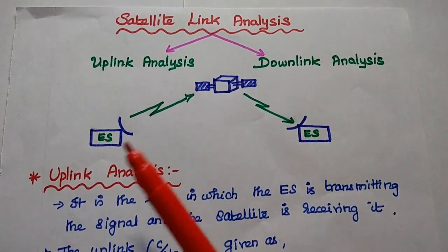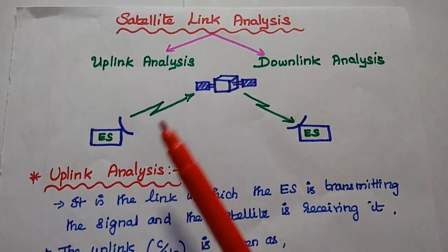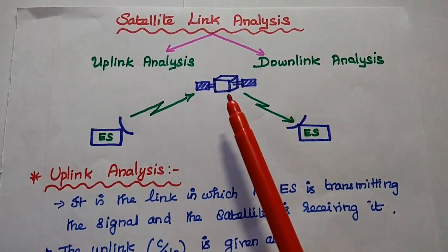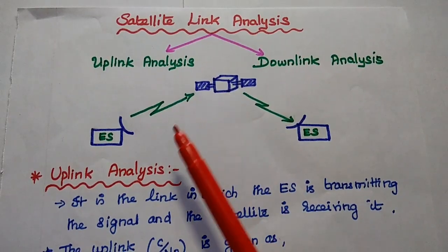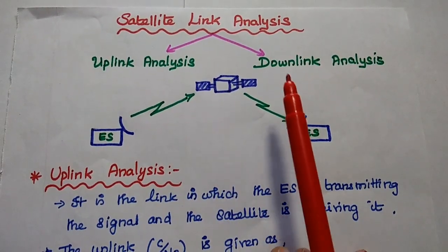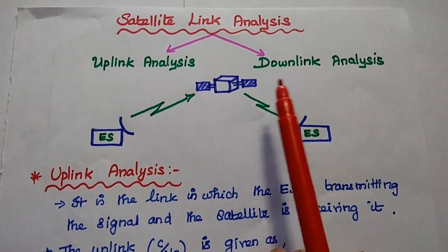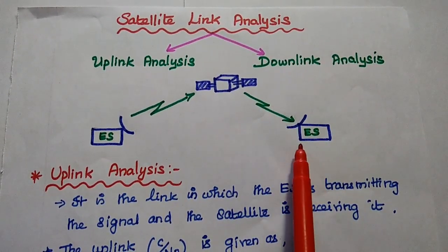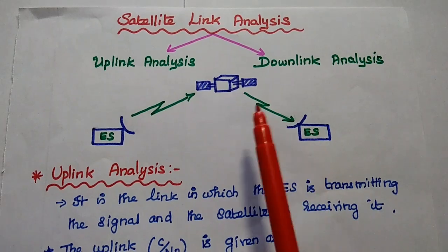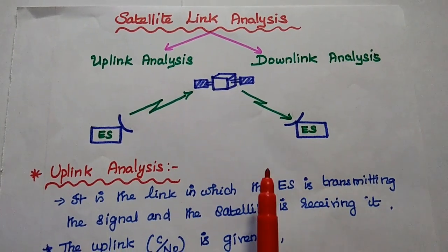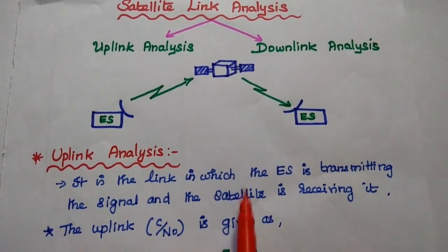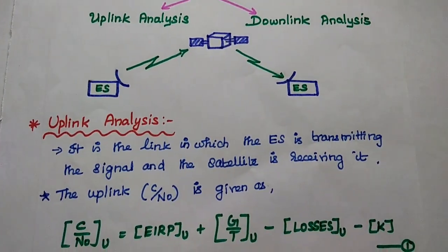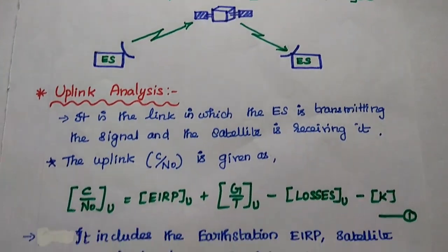In uplink, the earth station is transmitting the signal and the satellite is receiving it. In downlink, the satellite is transmitting the signal and the earth station is receiving it. Let's start with uplink analysis.